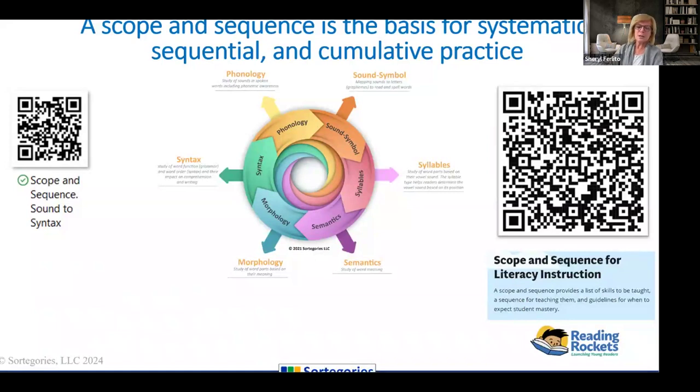First, in order to understand what you have in your instruction, it's really important to have a really solid scope and sequence. The QR code on the left is the scope and sequence specific to Sortagories, levels A and B, and it really does go from sound to syntax. That's represented on the word knowledge network. Reading Rockets is a great resource to talk through what is important about scope and sequence. Why is it important? And Sortagories scope and sequence from sound to syntax, more than just phonics is featured on Reading Rockets, which we're really proud of.